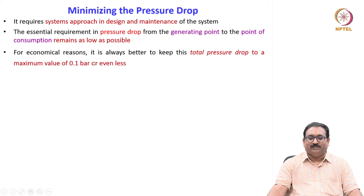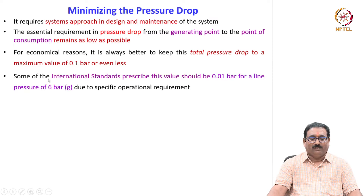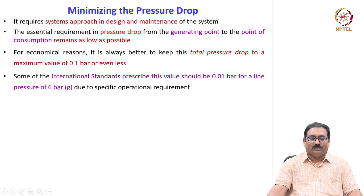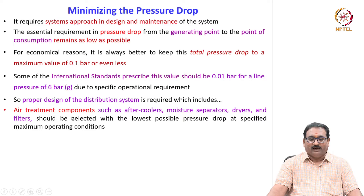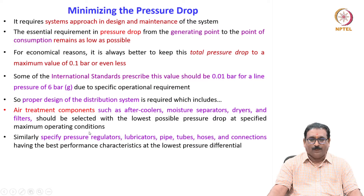For economic reasons, it is always better to keep the total pressure drop to a maximum value of 0.1 bar or even less. Some international standards prescribe this value should be 0.01 bar for a line pressure of 6 bar gauge due to specific operational requirements. Proper design of the distribution system is required, which includes air treatment components such as aftercooler, moisture separator, dryers and filters, selected with the lowest possible pressure drop at specified maximum operating conditions.